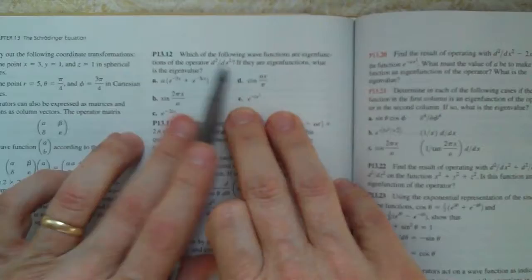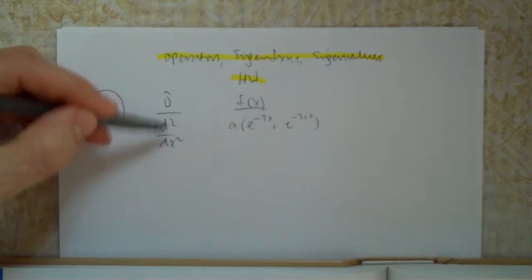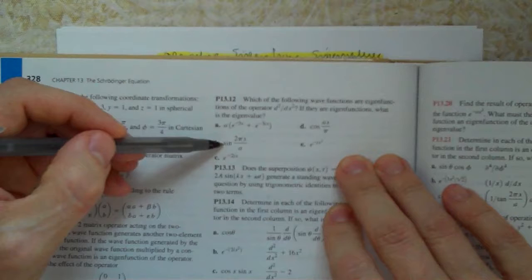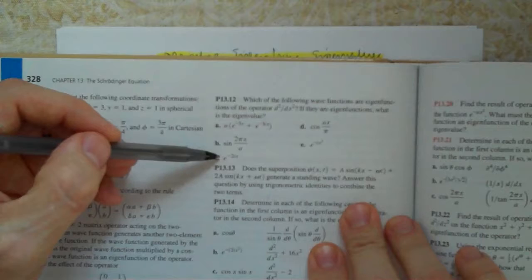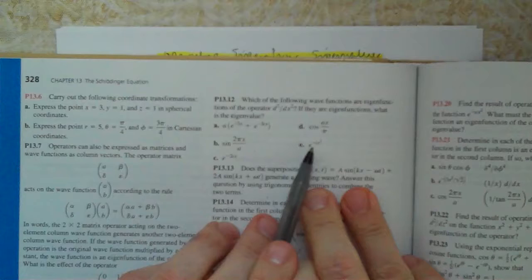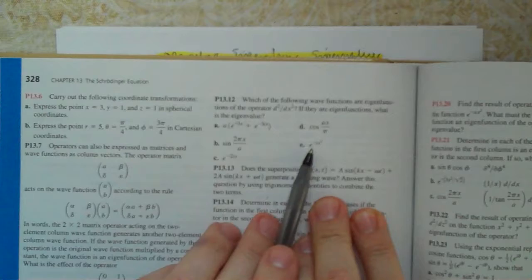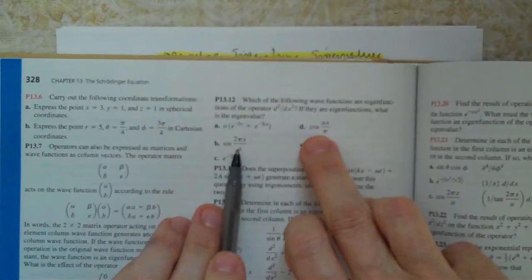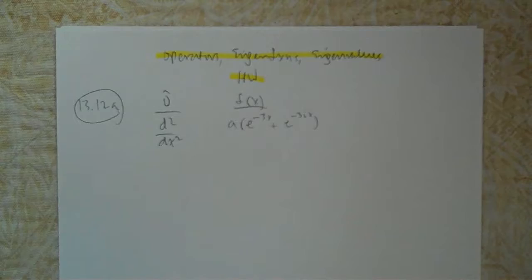To clarify, I'll write operator O-hat for the operator. I'm going to do a couple of parts of this problem in one video. Part A is an exponential, part B is trigonometric, and there's also another exponential with a squared exponent that's a bit unusual. I'll do parts A, B, and E for this video.